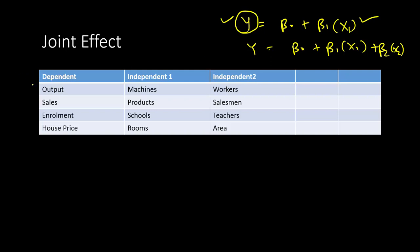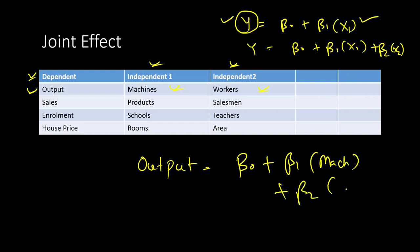We have four examples with a dependent variable and two independent variables. The first case has output as the dependent variable and machines and workers as independent variables — trying to find output in a factory based on number of machines and number of workers. The regression model will be: output = β₀ + β₁·machines + β₂·workers. If you increase machines, we expect output to go up, but without increasing workers, machines alone won't impact output much. That's where interaction effect plays a big role.